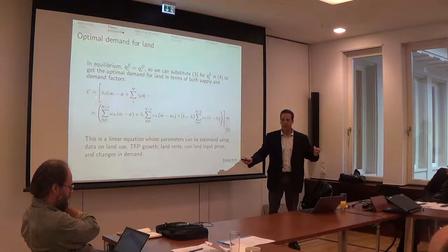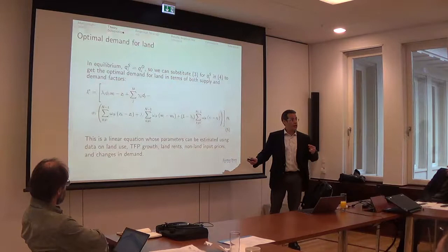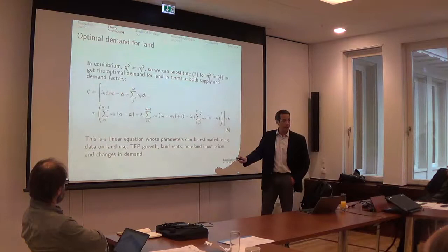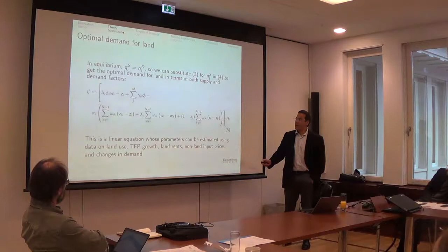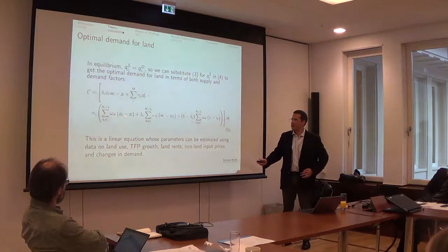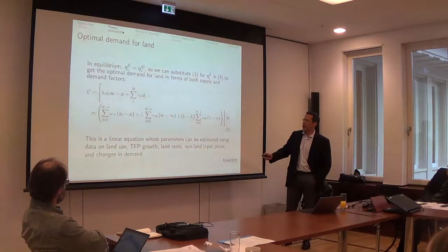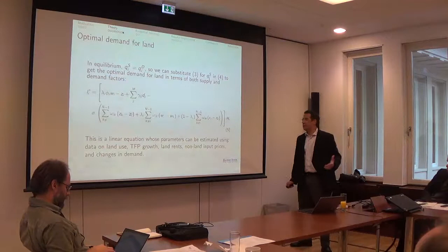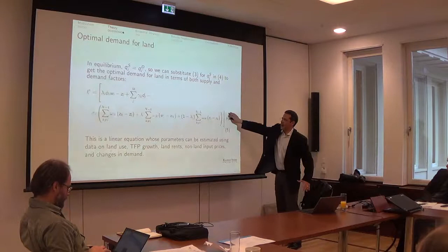And also the relative changes in technological progress, vis-a-vis its competitors, weighted by those competition indices. And they also enter, and we also have the changes in non-land input prices. So these are the input costs, I mean land rents, and then some bunch of parameters that are here. Now, one reason the CES preference system is so popular is that this is a linear equation.